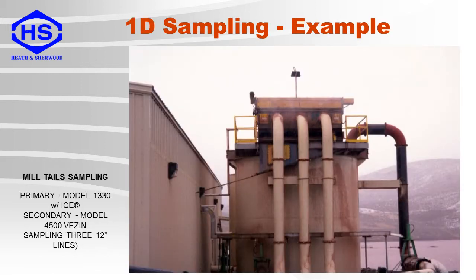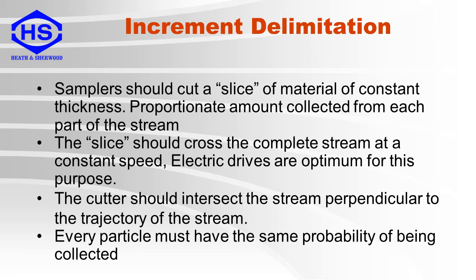Here we have an example of a 1D slurry sampling system. Three tailing lines are pumped up to the sampler. Inside the sampler is a cutter which is driven back and forth to extract increments on a timed basis. The slurry then drops down to a launder and is sent onwards for further mass or volume reduction.